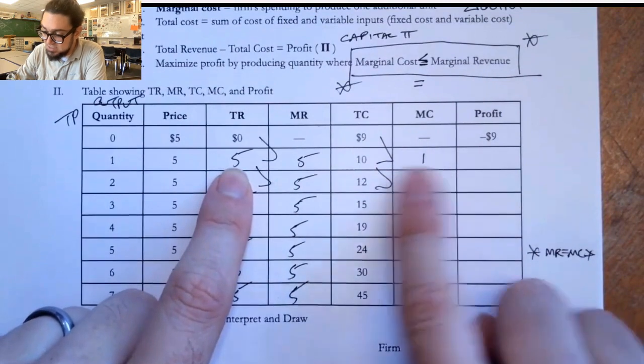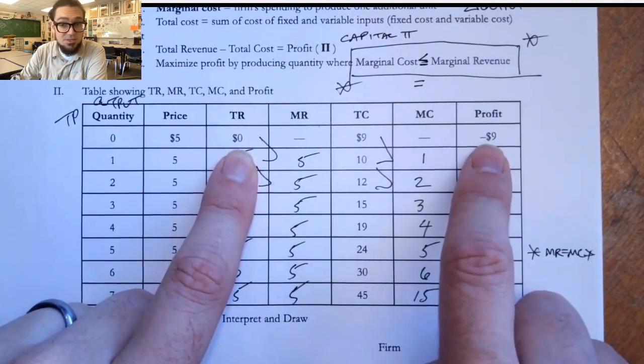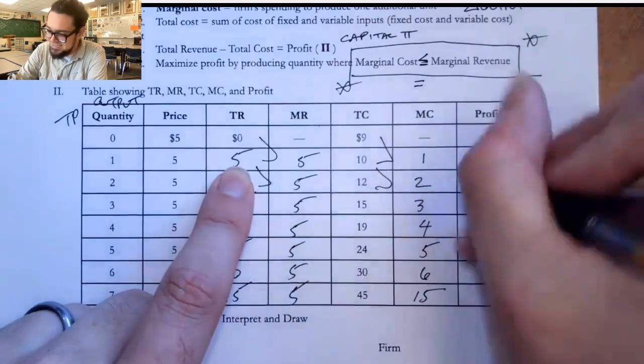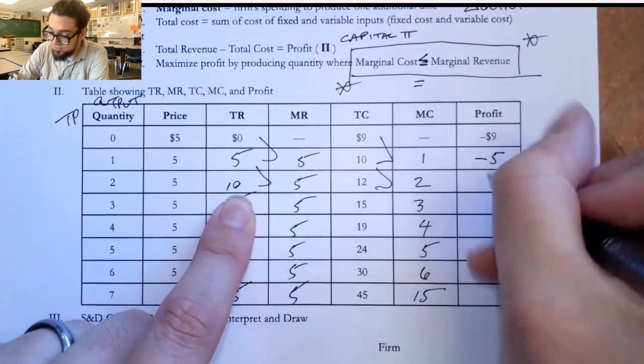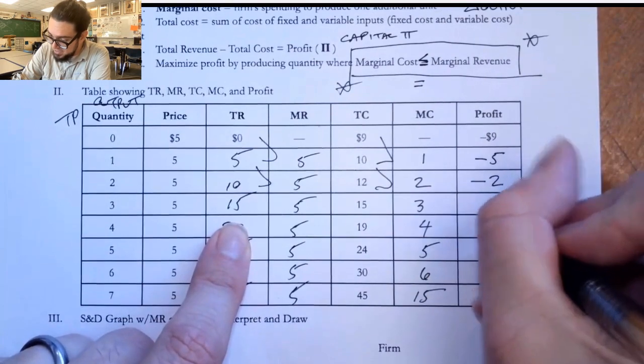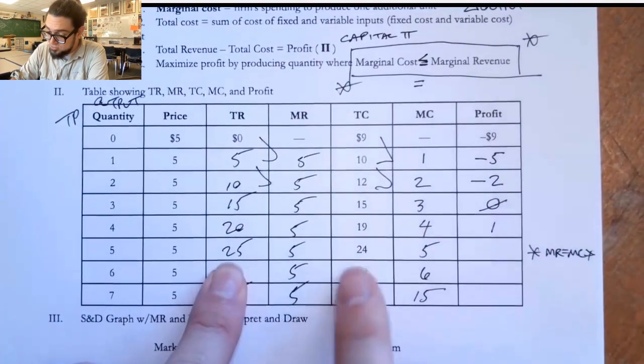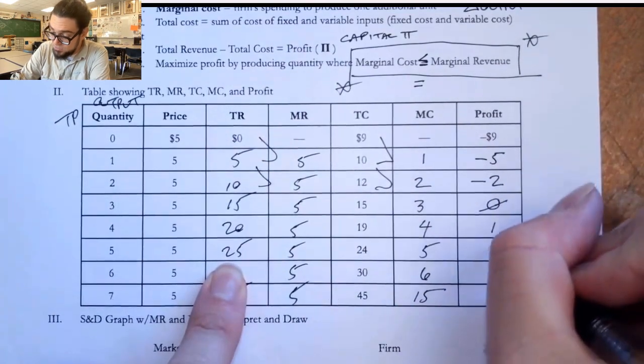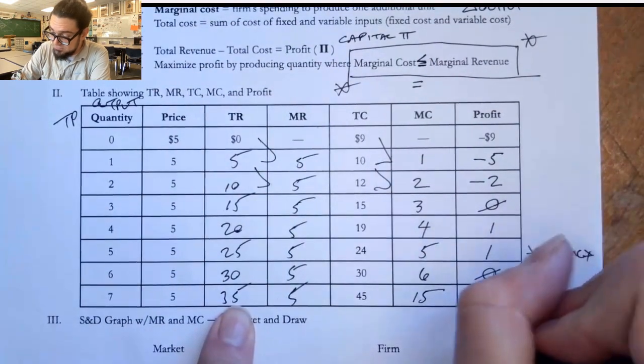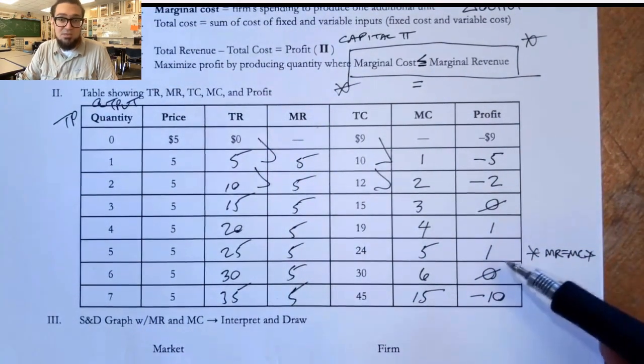First is total revenue minus total cost. And so we said zero to nine. Well, that gives you negative nine. So that's clearly the bad spot to stop. And you don't want to stop and not produce anything. Five minus 10 is negative five. 10 minus 12 is negative two. Oh boy. 15 minus 15. Now the firm's breaking even. 20 minus 19 is one. 25 minus 24 is one. 30 minus 30 is zero. And 35 minus 45 is negative 10.